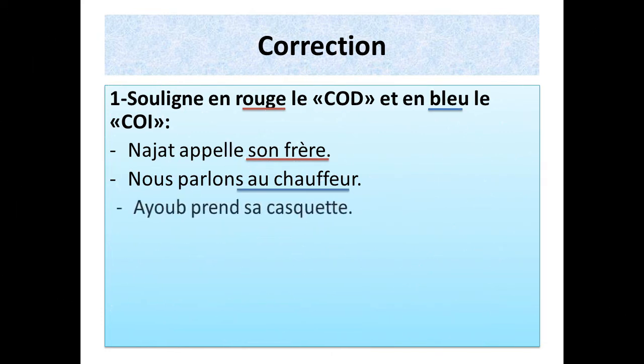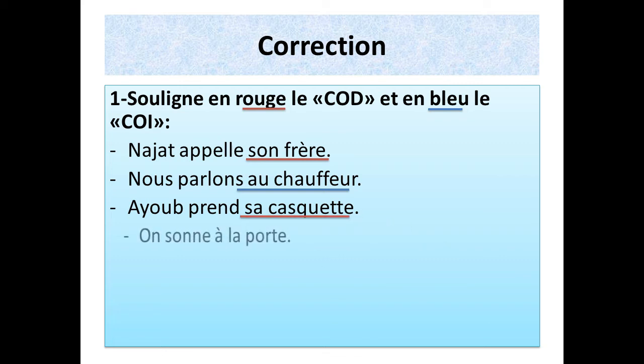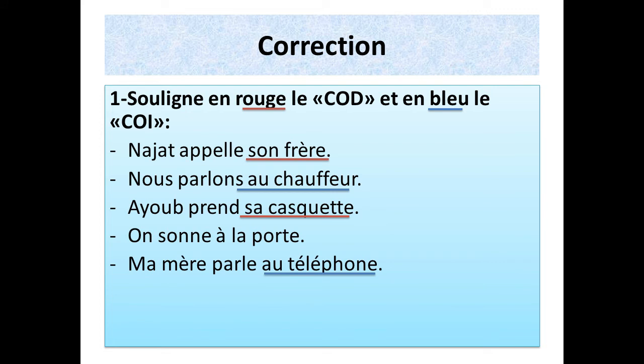Pour la phrase suivante : Ayoub prend sa casquette. Ayoub prend quoi ? Ayoub prend sa casquette. « Sa casquette », c'est un complément d'objet direct. La phrase suivante : on sonne à la porte. On sonne à quoi ? On sonne à la porte. C'est un complément d'objet indirect. Pour la dernière phrase : ma mère parle au téléphone. Ma mère parle à quoi ? Ma mère parle au téléphone. Donc c'est un complément d'objet indirect.